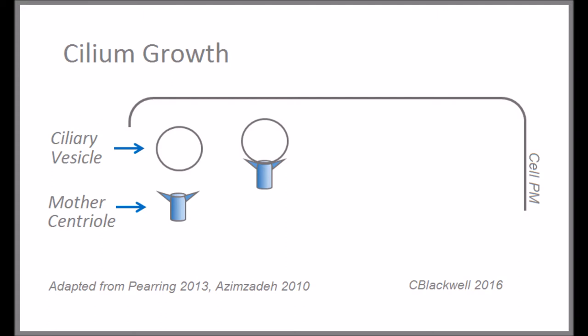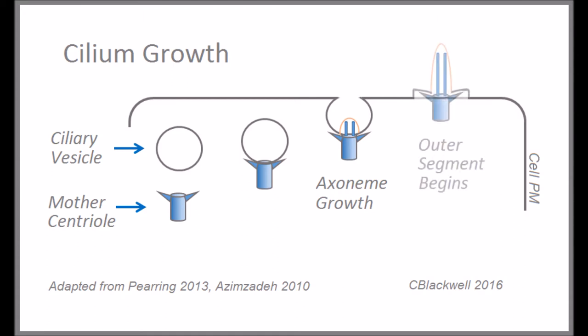After the cell has finished dividing, the centriole migrates to a new position ready to start forming the axoneme. This is now termed the basal body, and microtubules begin to extend from it. Soon, the vacuole fuses with the cell membrane, and the cilium continues to grow, becoming the outer segment.